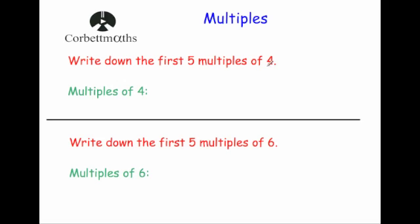So the first five multiples of four: four times one is four, four times two is eight, four times three is twelve, four times four is sixteen, and four times five is twenty.